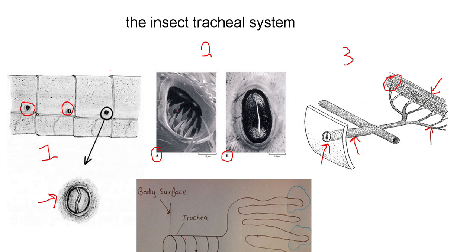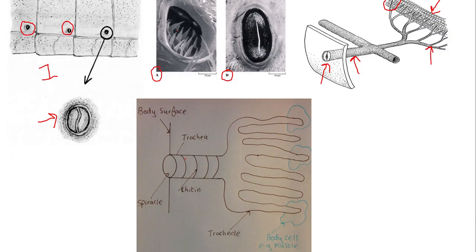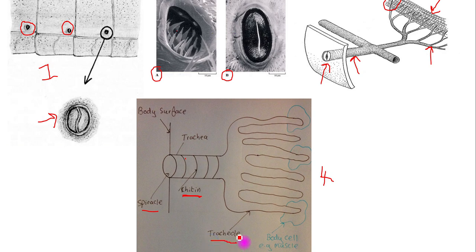In diagram number four, I've shown my own representation of the tracheal system. Again, there's a spiracle on the body surface, connected to the trachea, which is supported by rings of chitin. That trachea splits into many tracheoles, and each tracheole terminates in a body cell of the insect. This is where gas exchange is going to occur — right down at the ends of these tracheoles. That part represents the gas exchange surface, and it's important to make a note of that.